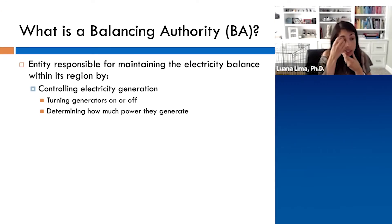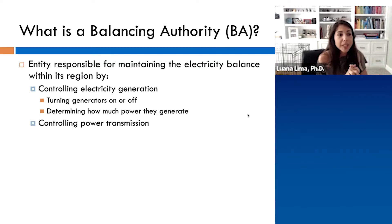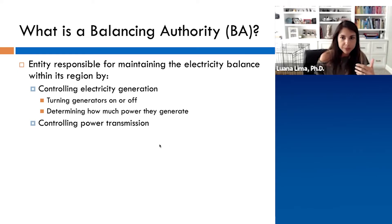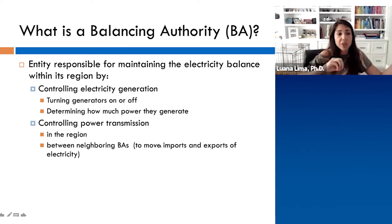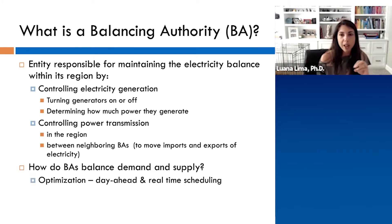I want to talk about the balancing authority perspective, specifically the optimization models used to find the dispatch for generators and to find the electricity prices traded on those markets. The balancing authorities are the entities responsible for maintaining balance within their regions. They control electricity generation, turning generators on and off, determining how much power they can generate, and they also control power transmission and interconnection with other balancing authorities. The key question is how they balance demand and supply at all times, and the answer is using optimization models.